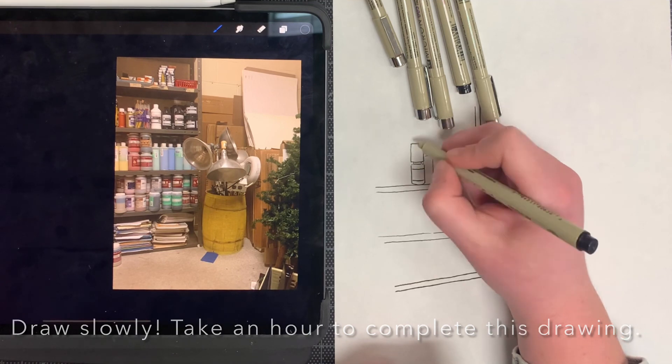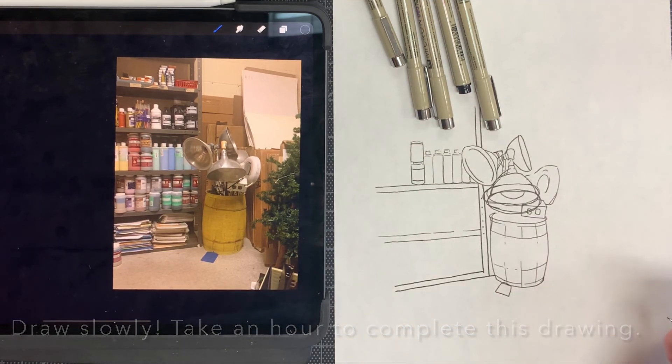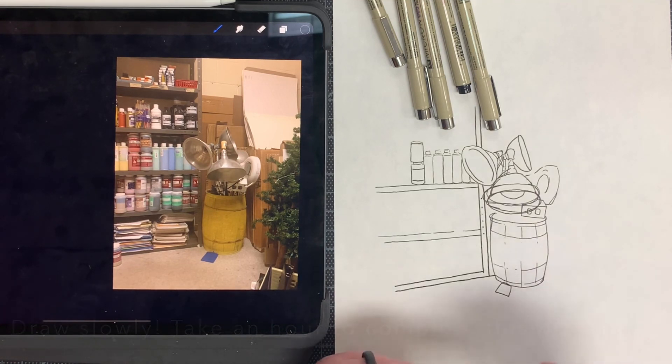After you draw your closet, pantry, or portion of a room in your house for that hour, take a picture of your contour line drawing and submit it into the assignment for today. If you have any questions, don't hesitate to reach out.